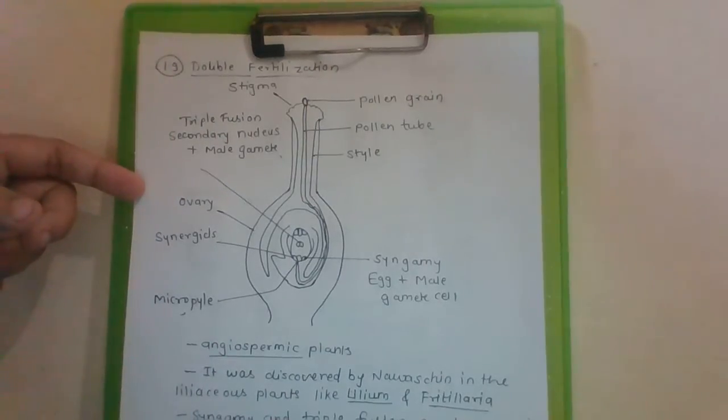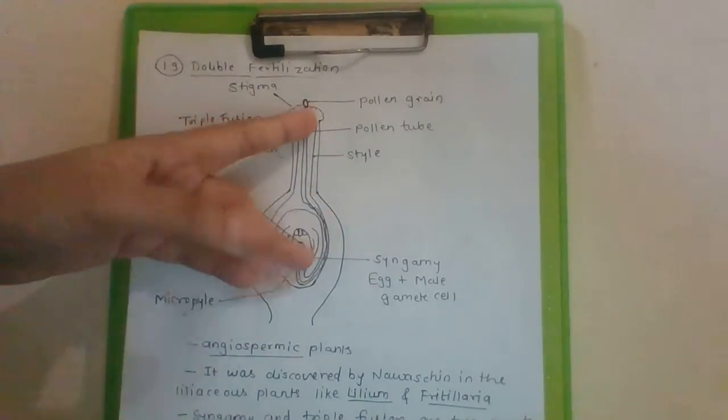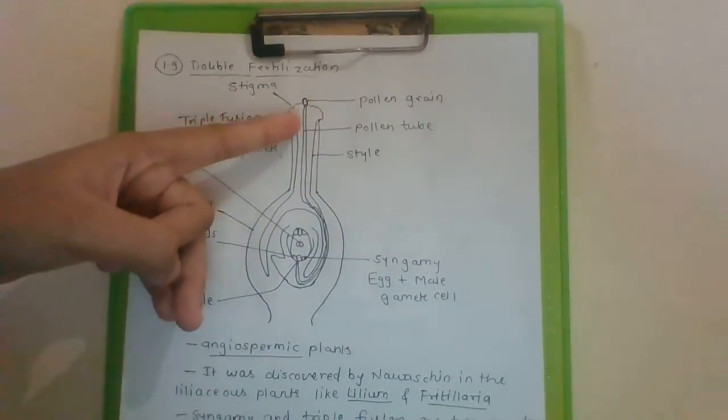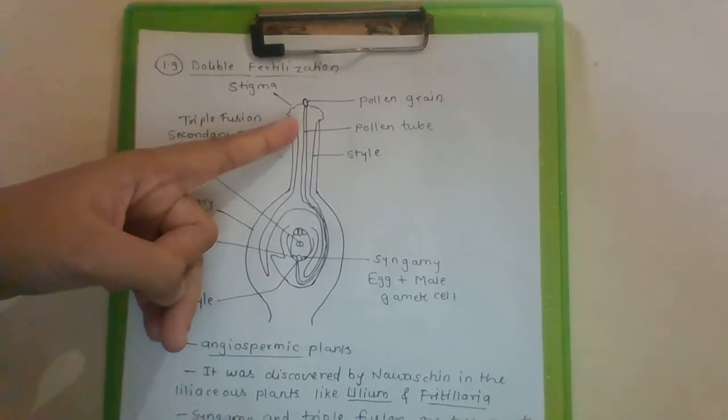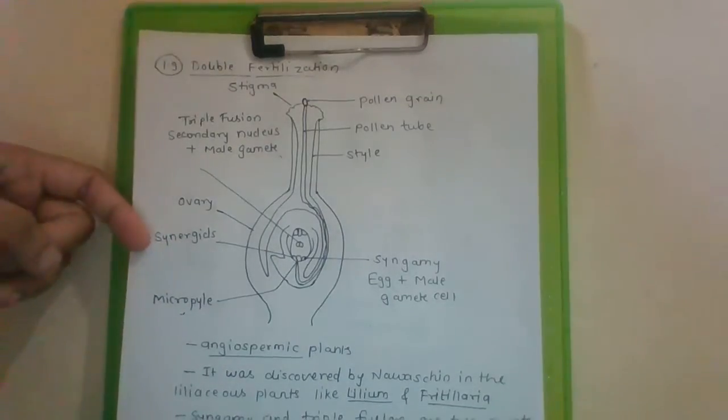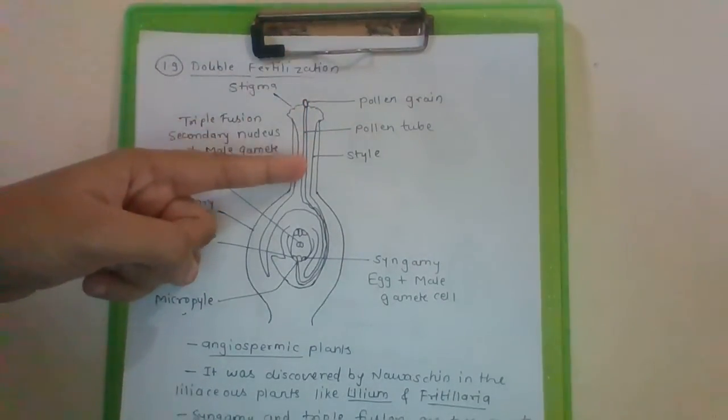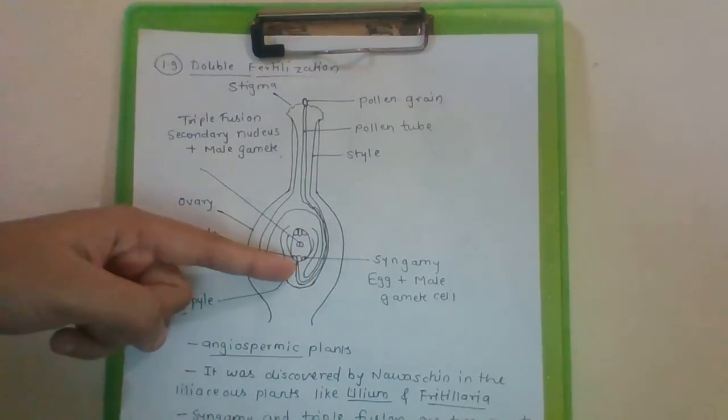So we are going to discuss the process of double fertilization. After pollen grain has reached on the surface of stigma, it germinates and forms pollen tube. This tube-like structure is called pollen tube.